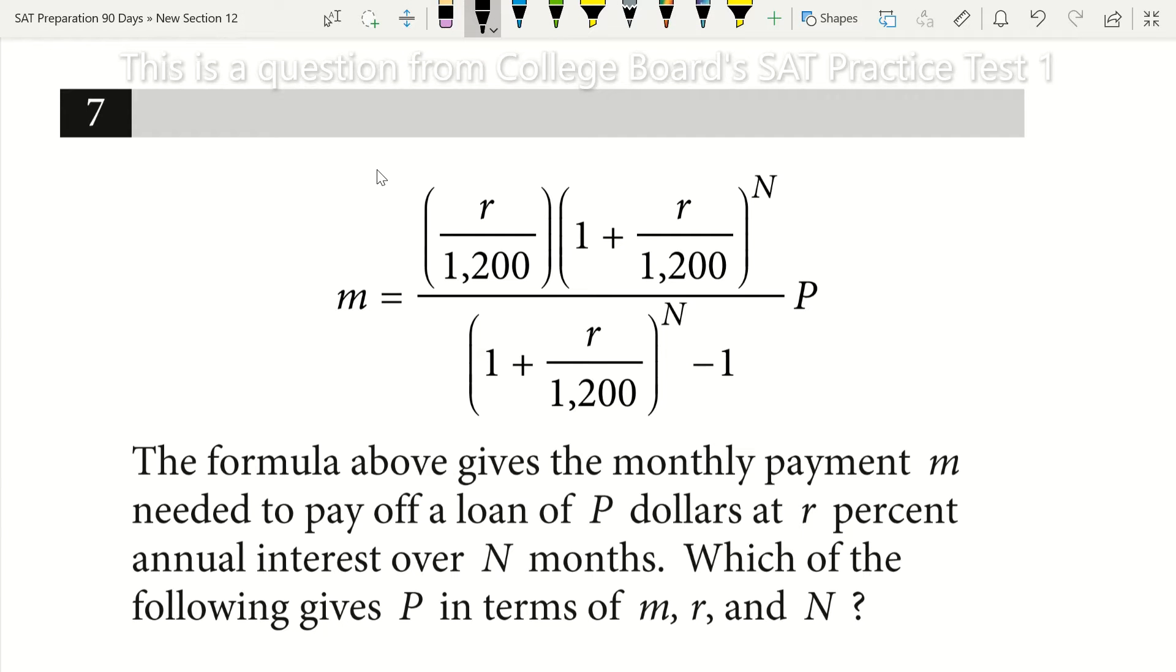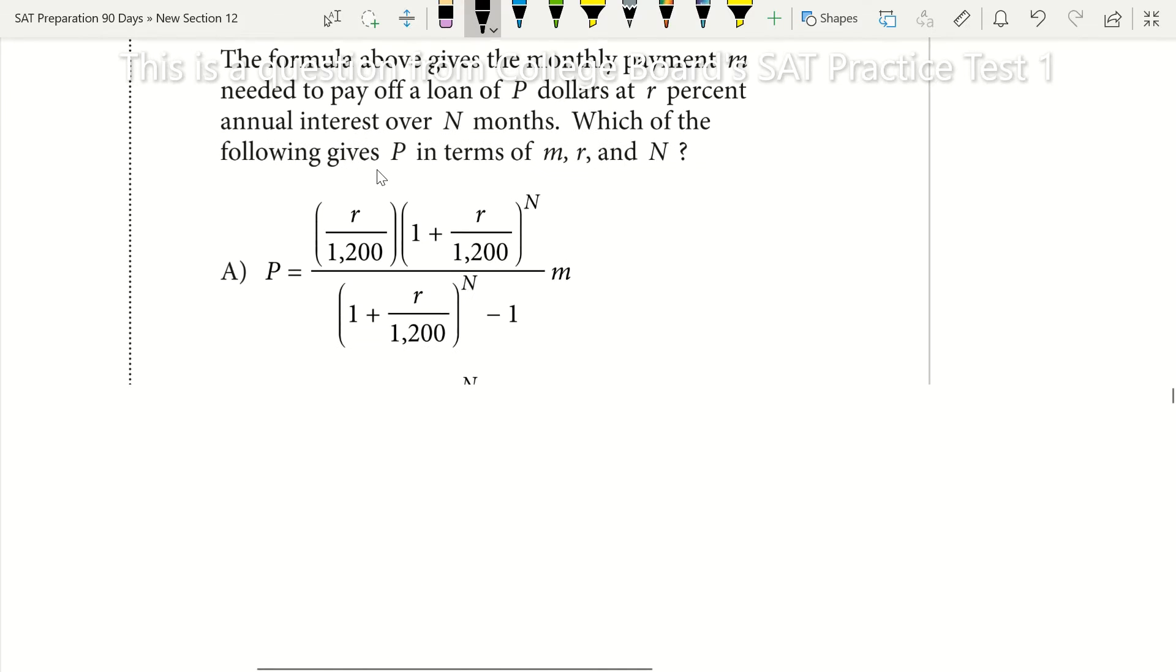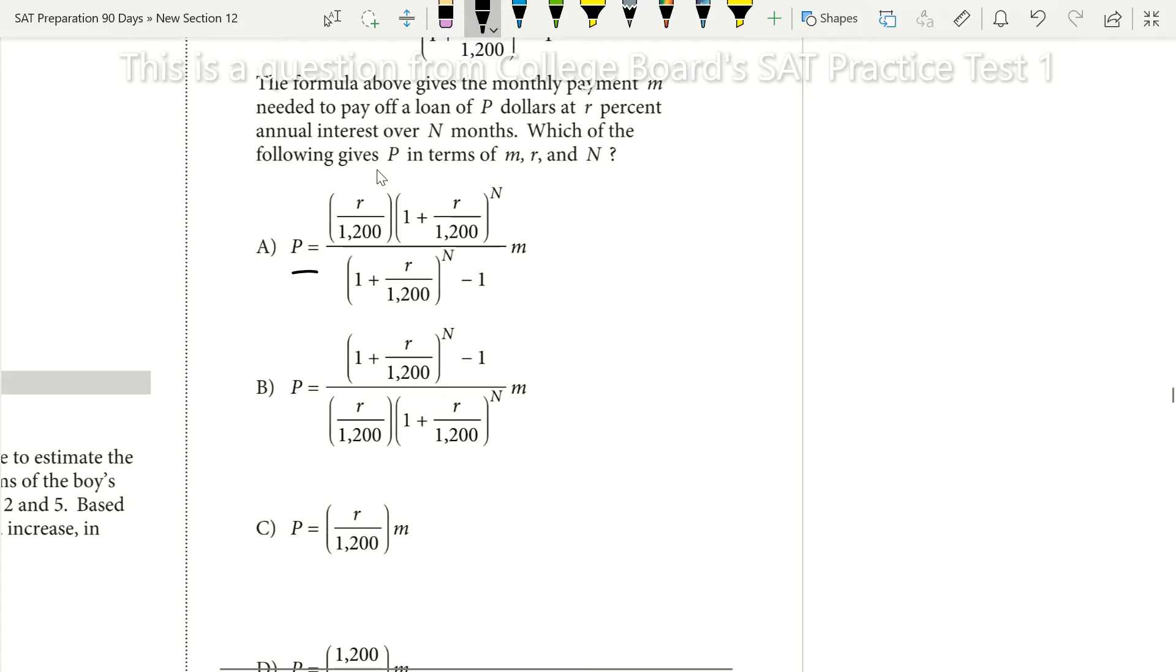All right, here's an SAT math trick for you. Anytime you see an equation with a bunch of different variables like m, r, n, and p, what you're going to want to do is zoom out, take a look at your answer choices, and see if you're just asked to solve for what one of them equals.